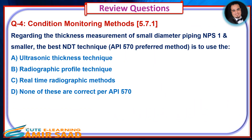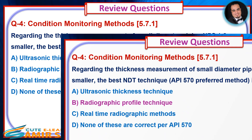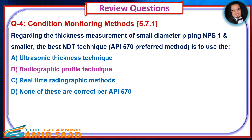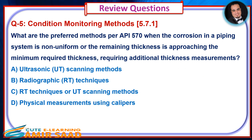Question 4 — Regarding the thickness measurement of small diameter piping NPS 1 inch and smaller, the best NDT technique and API 570 preferred method is to use the... Answer is B. Question 5 — What are the preferred methods per API 570 when the corrosion in a piping system is non-uniform or the remaining thickness is approaching the minimum required thickness, requiring additional thickness measurements? Answer is C.